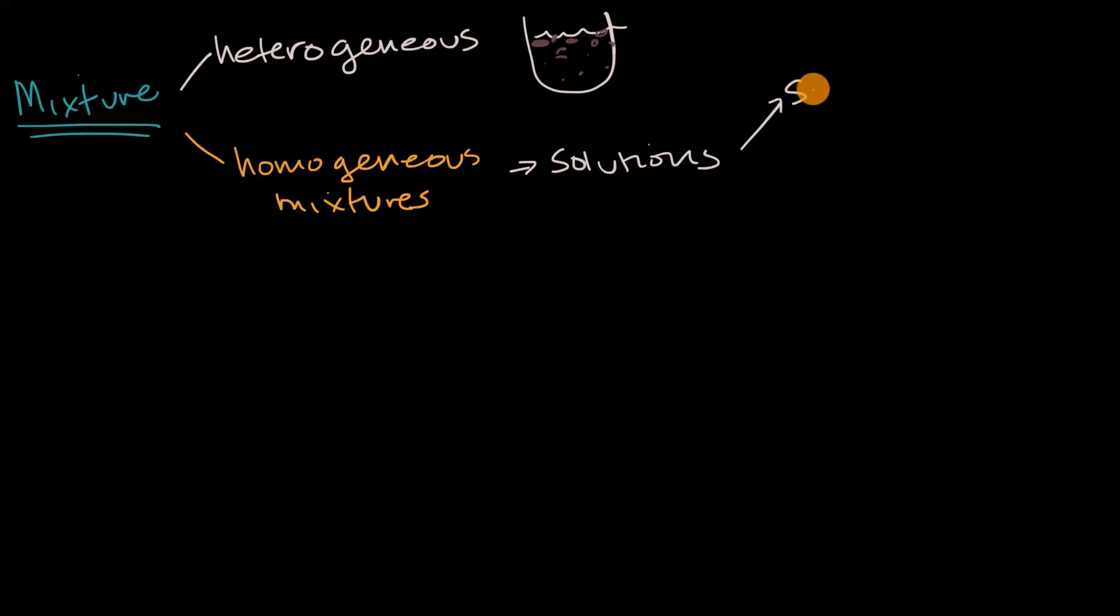And an example of a solid solution would be, say, a metal alloy, where at the macro level, its color, how well does it conduct electricity, how malleable is it, how hard is it—it looks like the properties are uniform throughout the alloy.